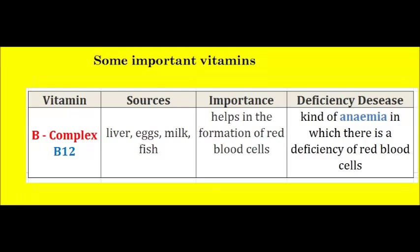Vitamin B12. Sources of Vitamin B12 are liver, eggs, milk, and fish. The importance of Vitamin B12 is for the formation of red blood cells. Deficiency disease due to lack of Vitamin B12 is a kind of anemia in which there is a deficiency of red blood cells.